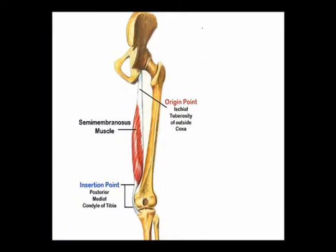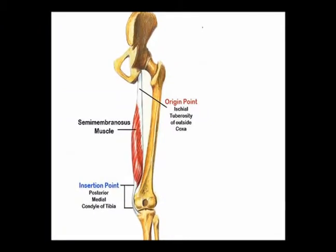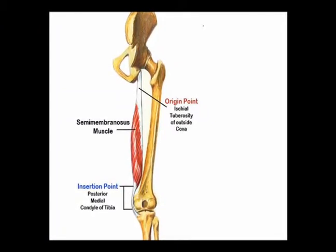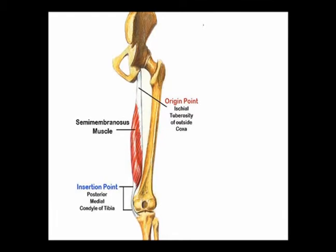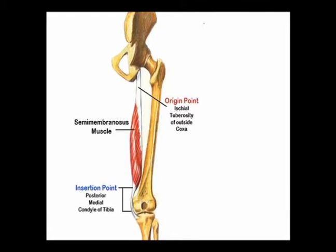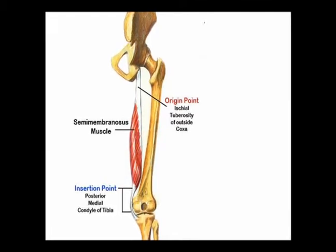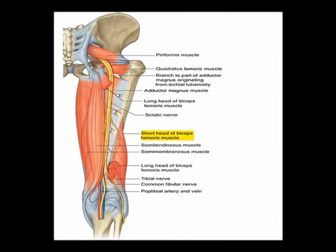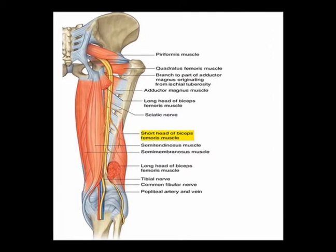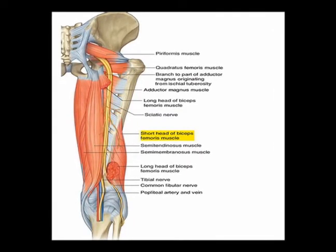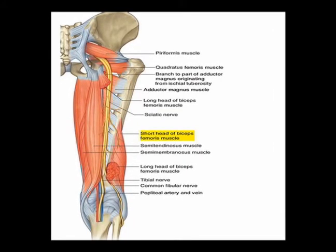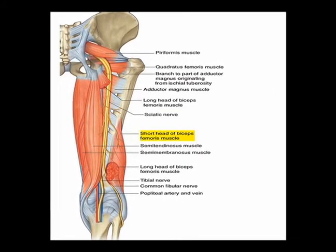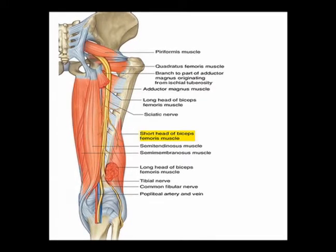The semimembranosus muscle is a medial hamstring muscle. It is located in the posterior thigh. The origin is the ischial tuberosity. The insertion is the medial condyle of the tibia. The innervation is the tibial nerve, which is a branch of the sciatic nerve from vertebral levels L5, S1, and S2.